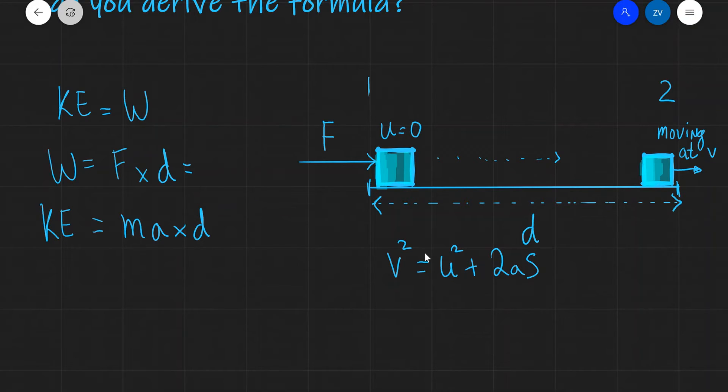Now because in this case the distance traveled is given the symbol d, rather than write s over here, I'm just going to write d. Additionally, we know that u is equal to 0, so this term over here we can just get rid of because this is just equal to 0. So what we're left with is that v squared is equal to 2 times ad.